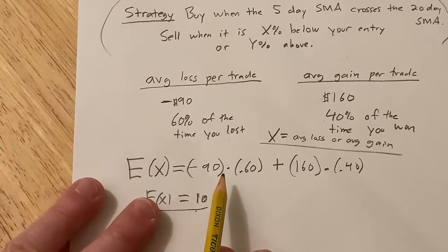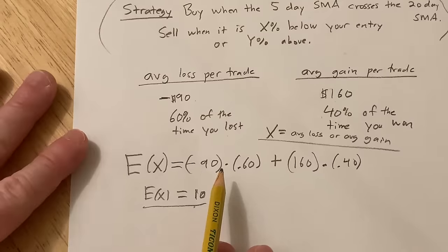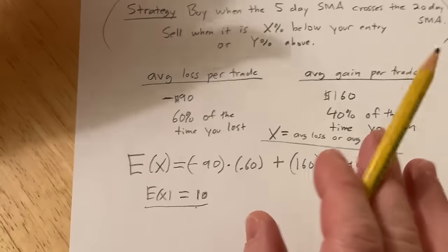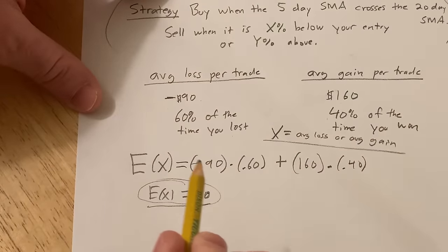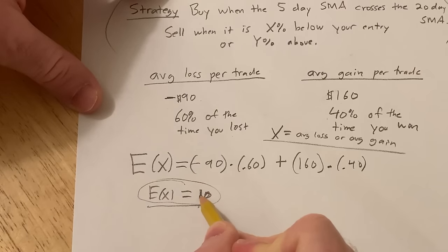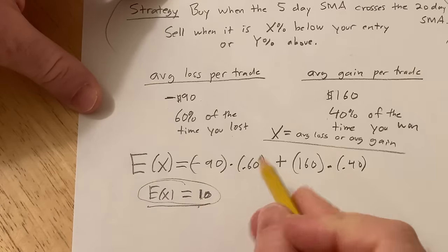This is not the real world. In the real world, something else will happen. You might make a trade and you might lose 200, it doesn't matter—it's going to be different. But in the long run, your average profit per trade is going to approach $10.